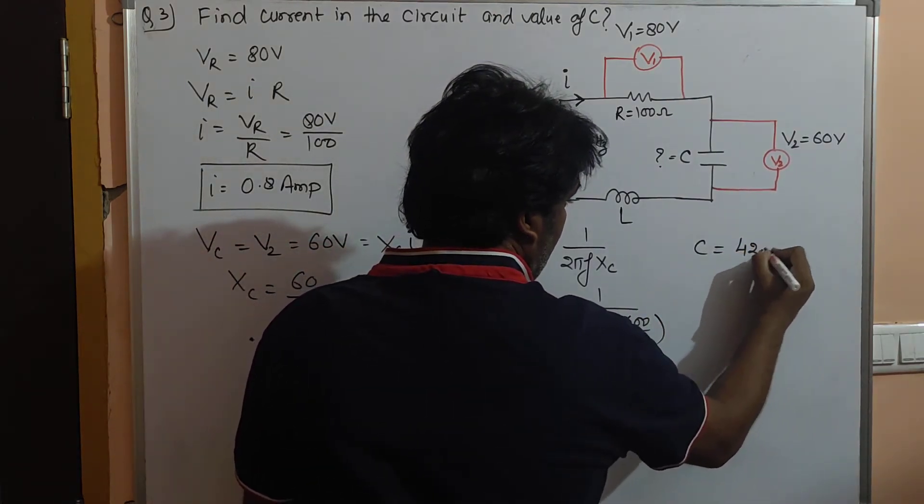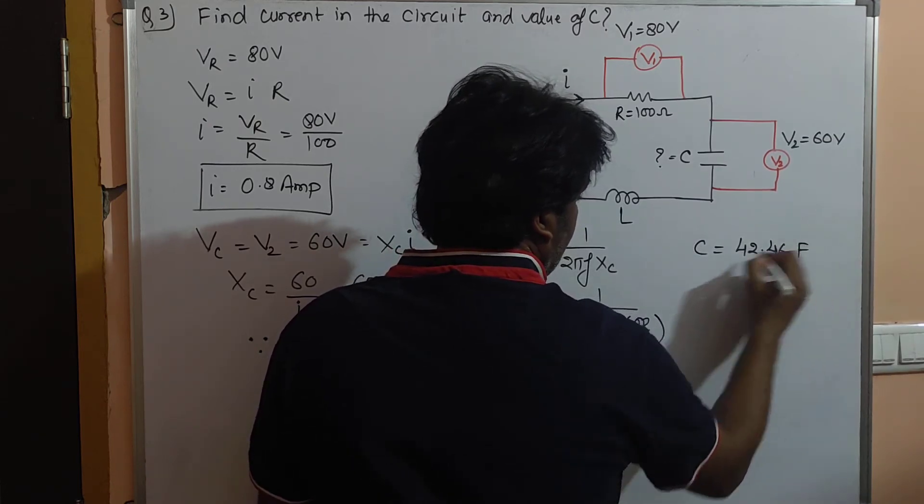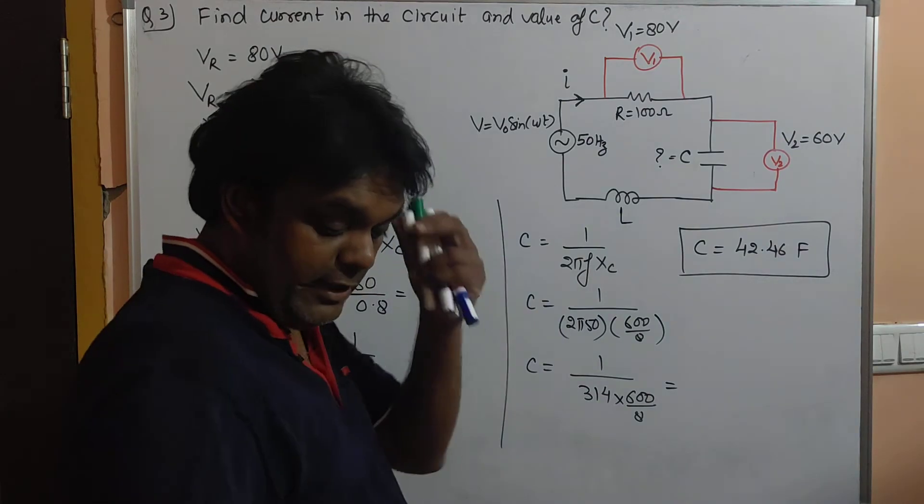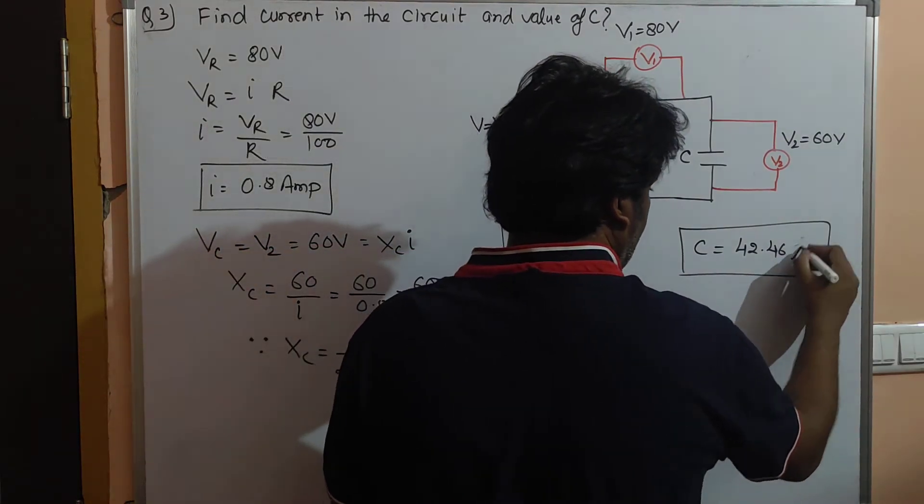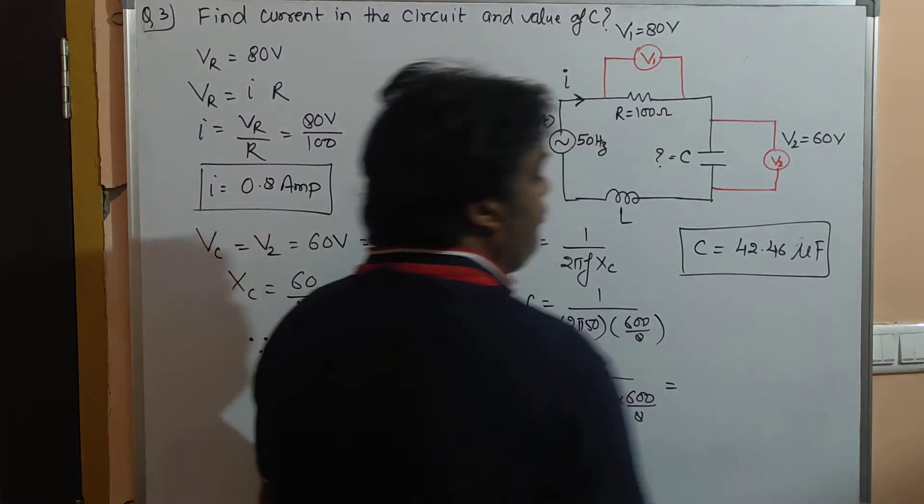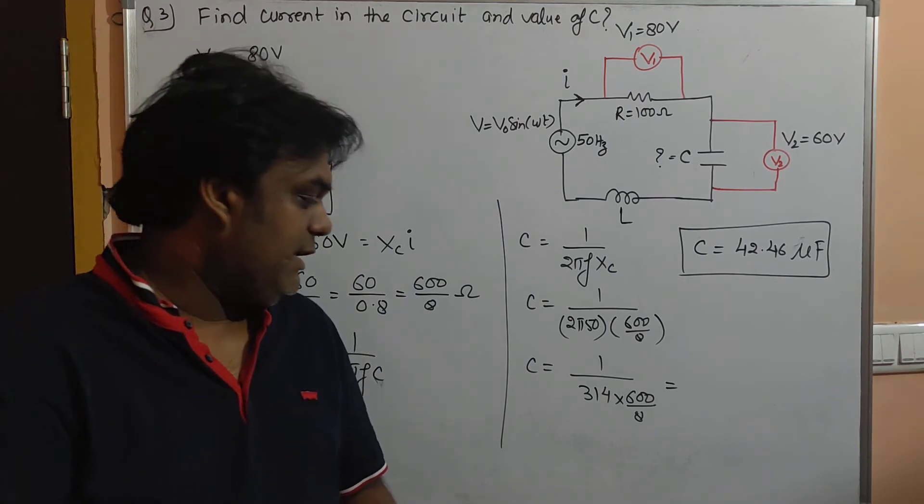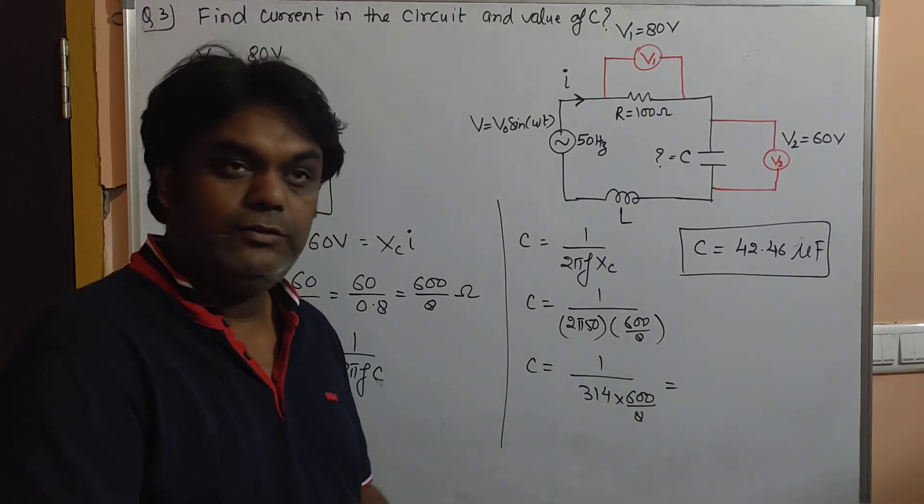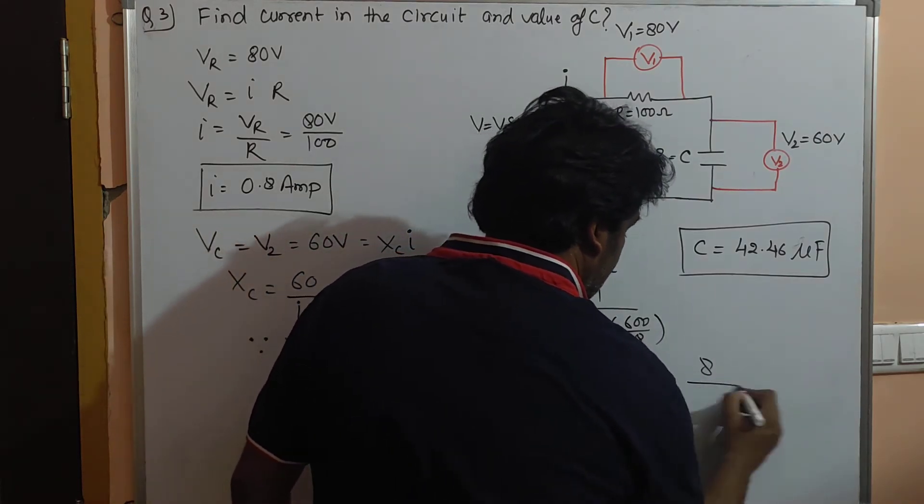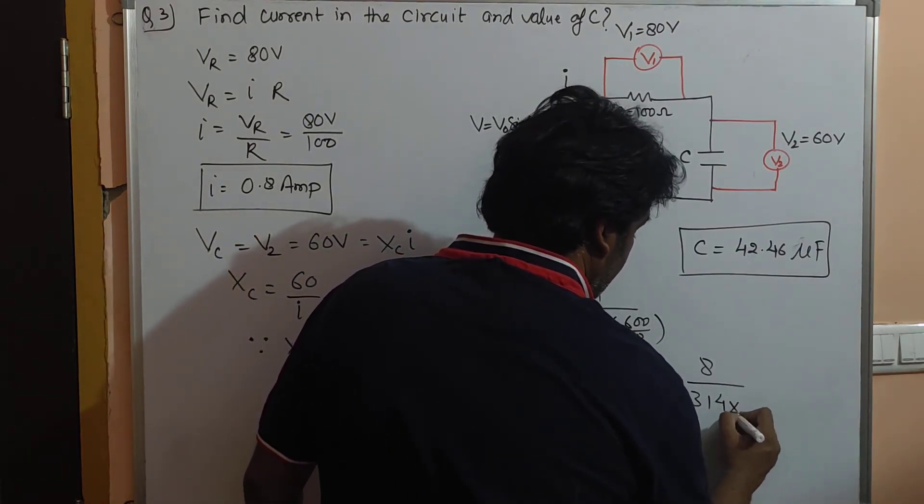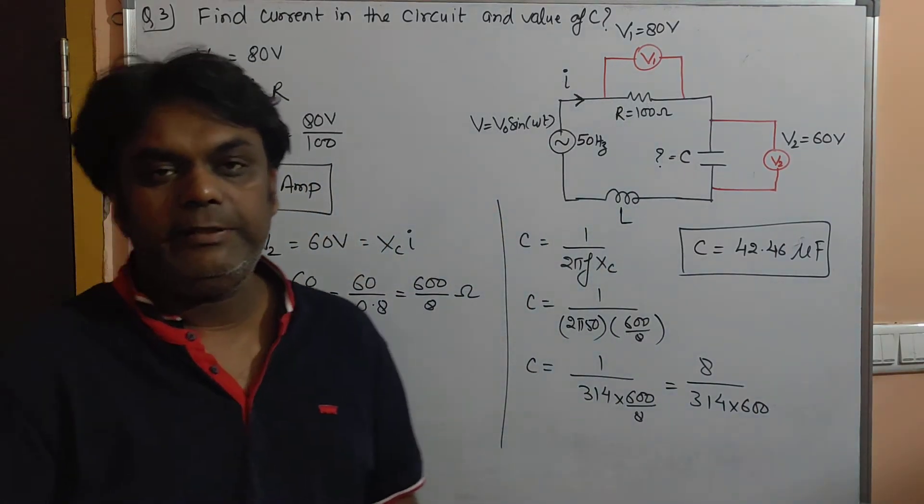The value of capacitance C is 42.46 microfarad. After calculating, this 8 will go up, so it is 8 upon 314 into 600. You can calculate this; it's not so difficult. In this way you can crack such kind of numericals.